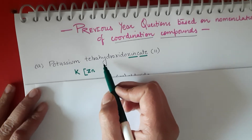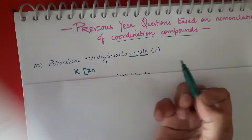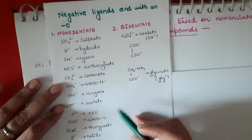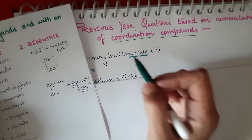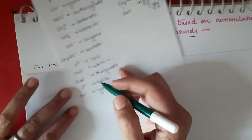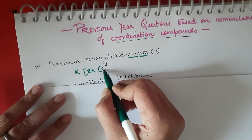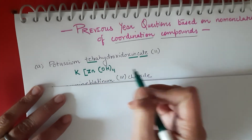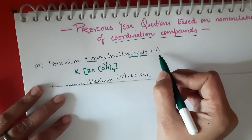Now we have to identify the ligand part. Here the ligand is hydroxido, so we have to check which formula it corresponds to. Hydroxido is OH, so we will write OH — whole 4 — because it's 'tetra'. Then we close the bracket. Here you can see '2' is written.